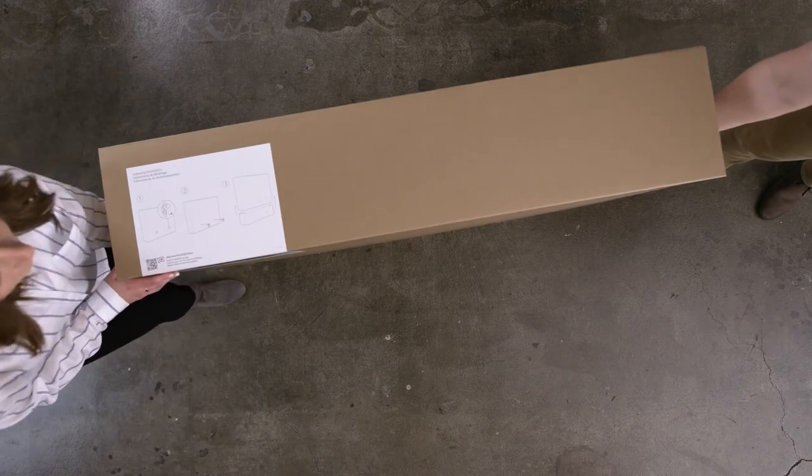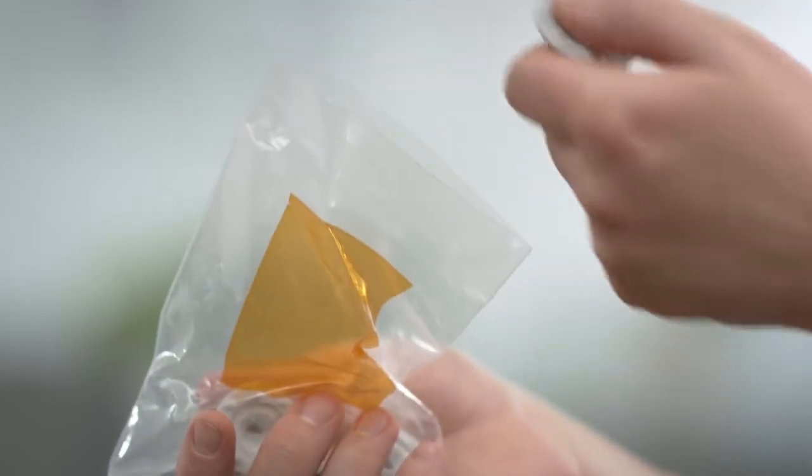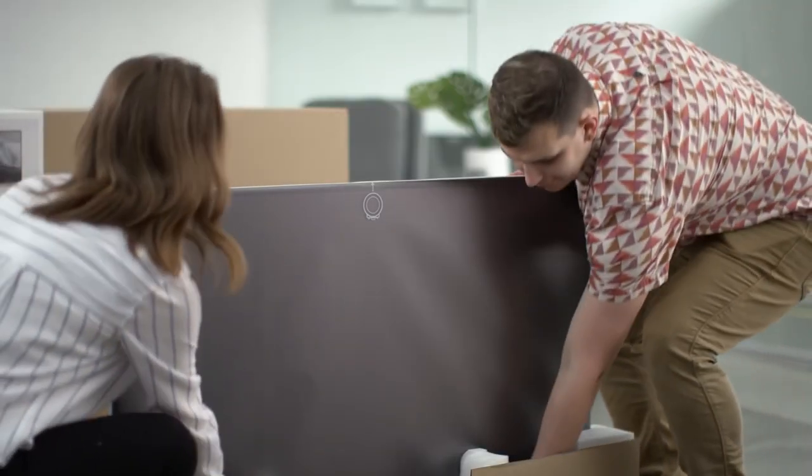If you haven't already prepared your Surface Hub for mounting, go ahead and do so now. Once you're ready, open the orange bag and attach the four hardware mounts to the back of the device.